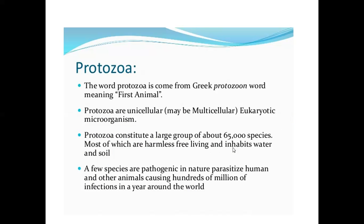The word Protozoa comes from Greek words meaning 'first animal.' Protozoa are unicellular, maybe multicellular, eukaryotic organisms. Protozoa constitute a large group of about 65,000 species, most of which are harmless, free-living, and inhabit water and soil.